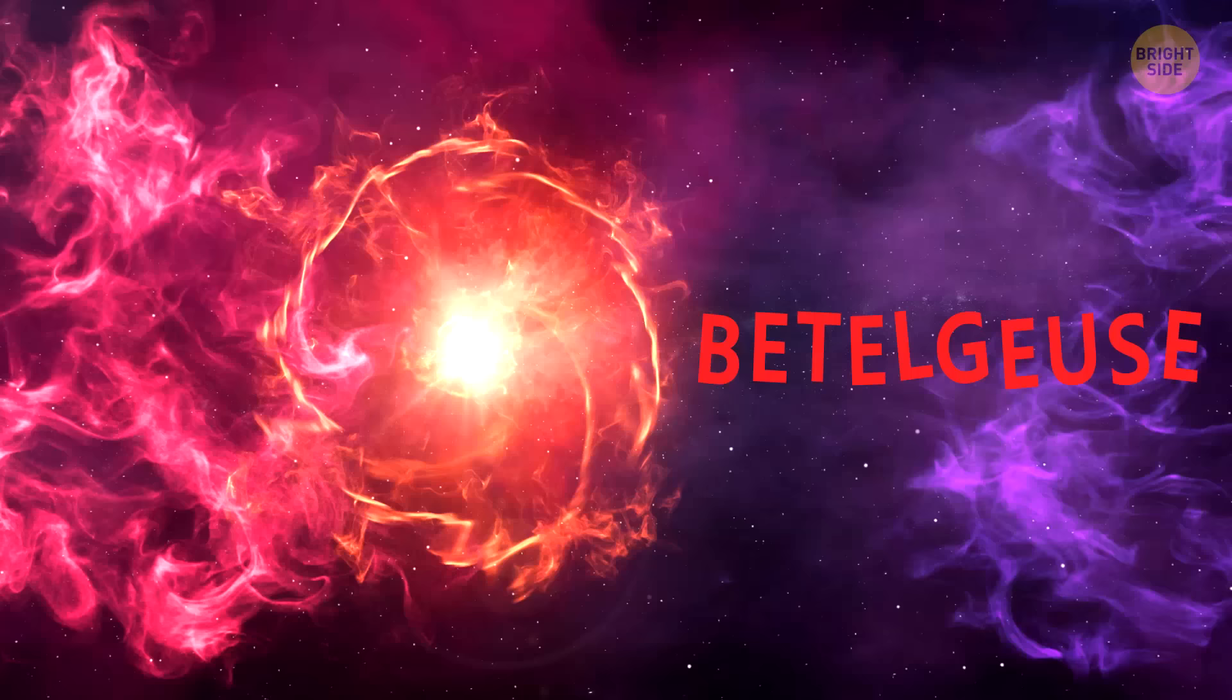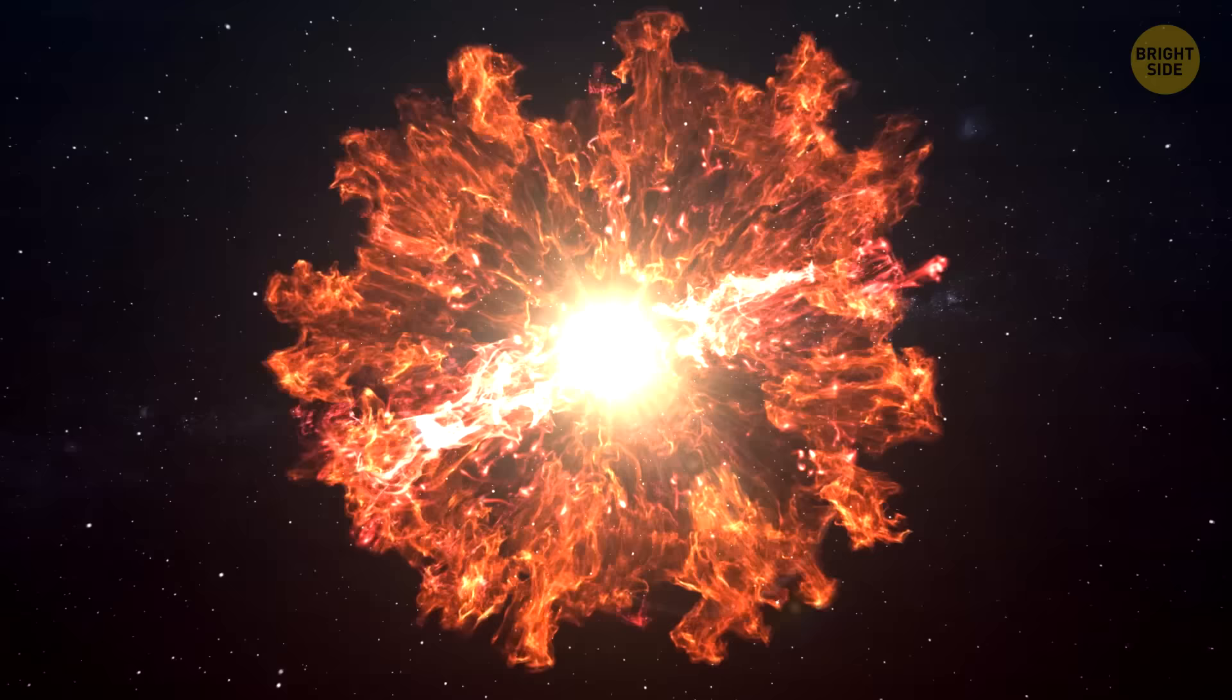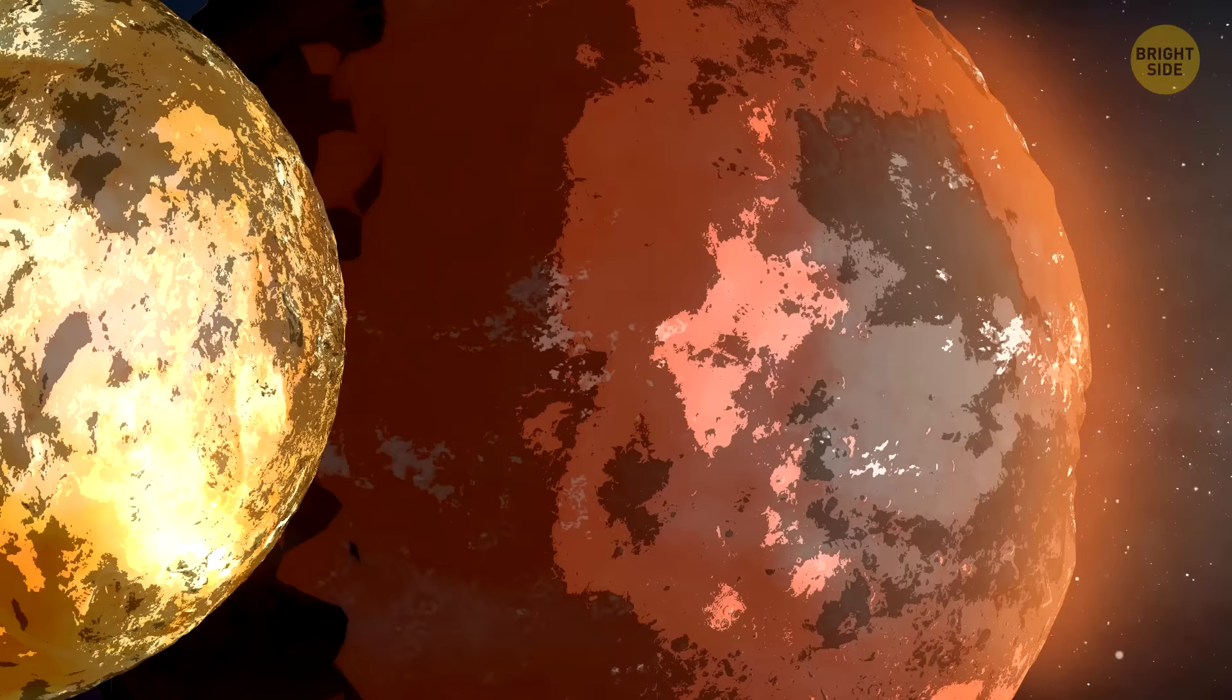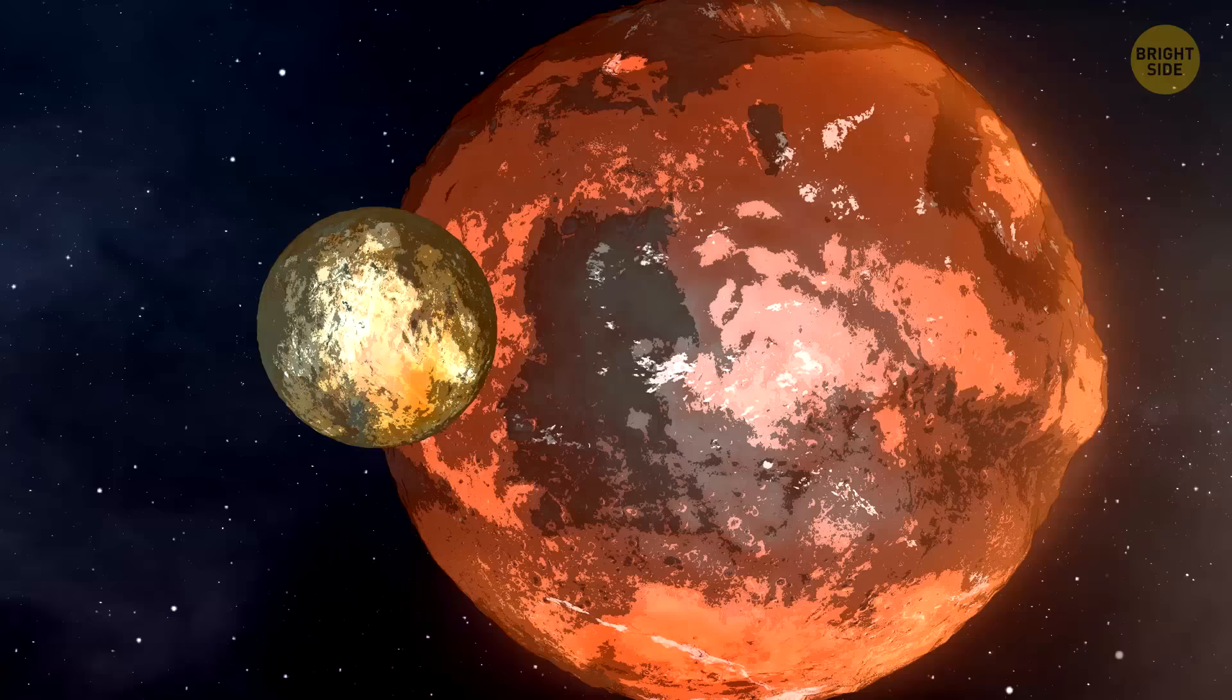In 1 million years, 2 out of 4 moons of Uranus will collide with each other, causing chaos on the planet. At the same time, Betelgeuse, one of the brightest stars in our galaxy, will explode, clearly visible from Earth.